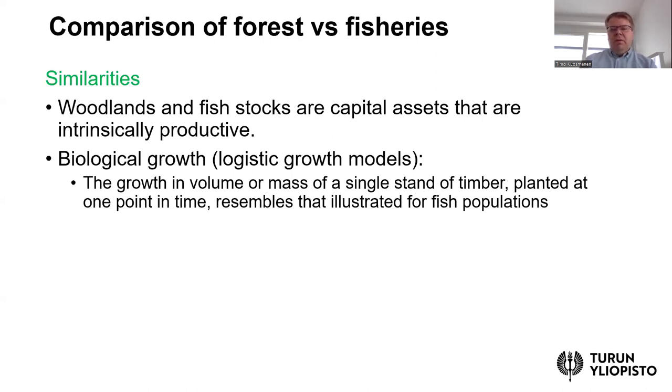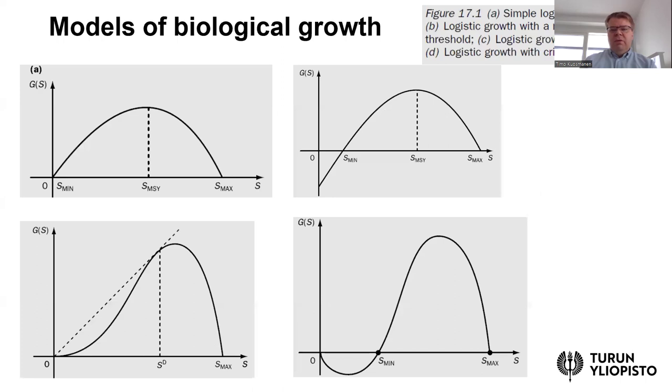Here I have four examples taken from the Perman textbook. Let's start with panel A, where the horizontal axis is the stock of timber in the woodland, and the vertical axis is G of S, which refers to growth rate.